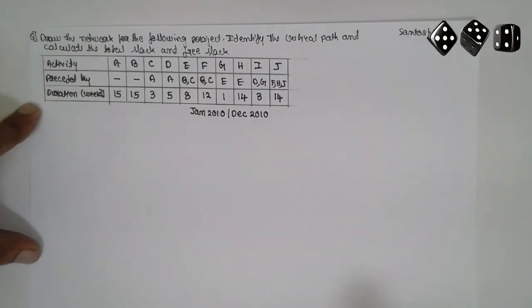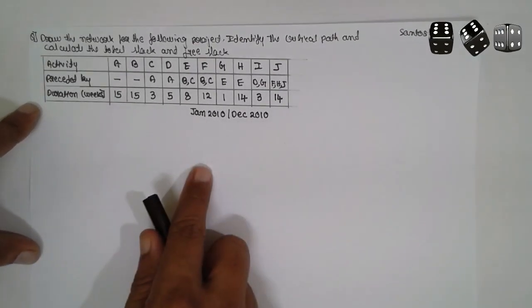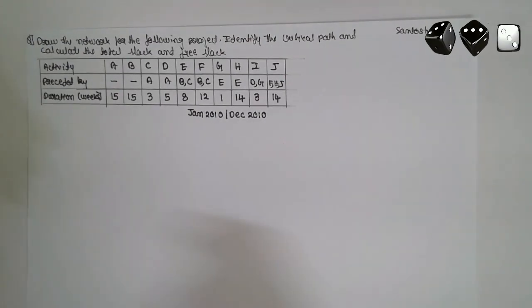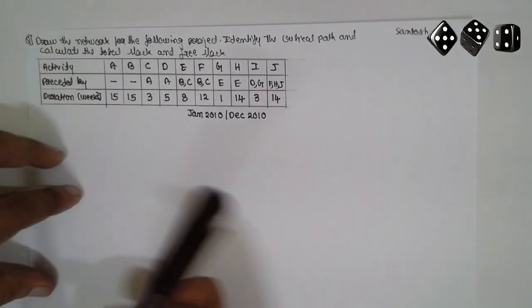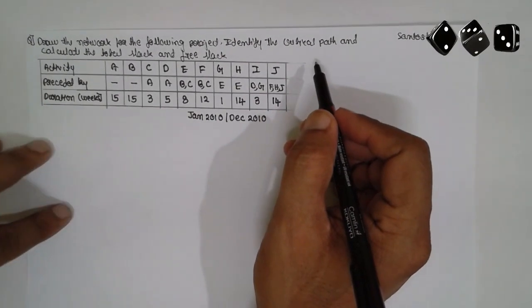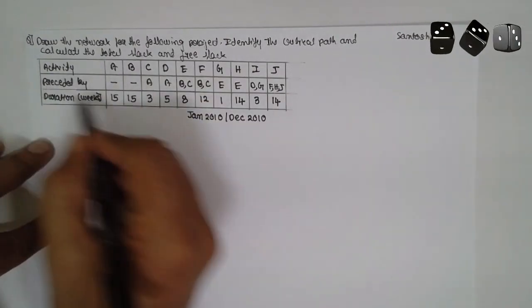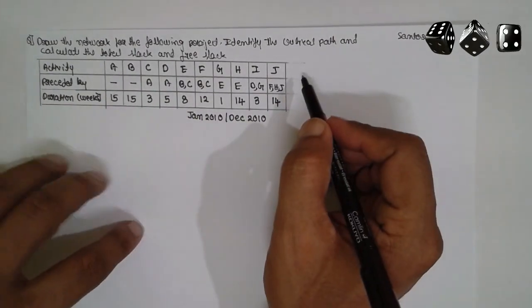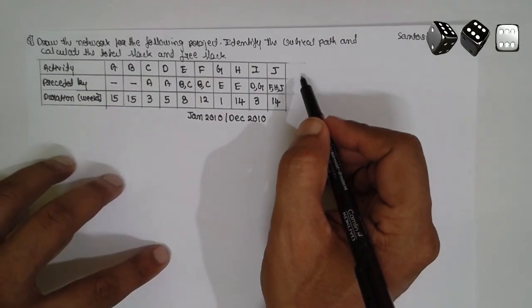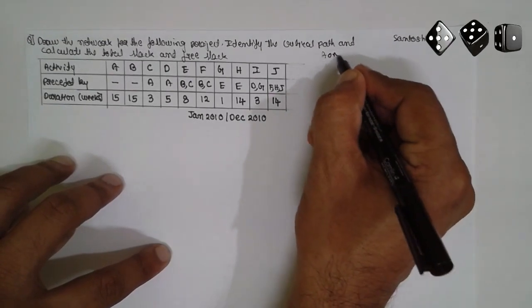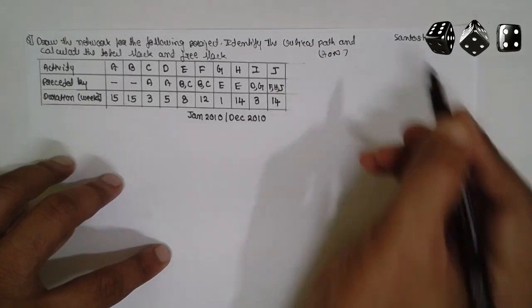I am Satyush Taidankar. Today's concept is about operation research — specifically the critical path method. I am following the Activity-On-Node method, that is the AON method.